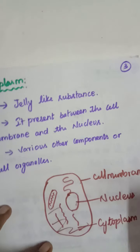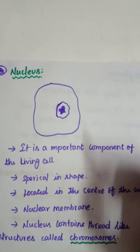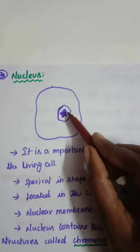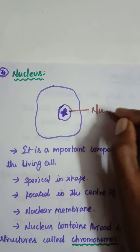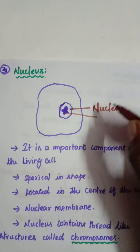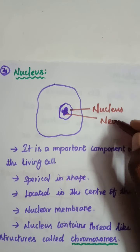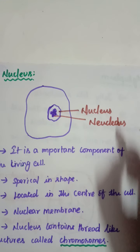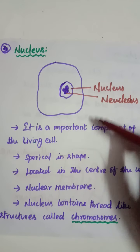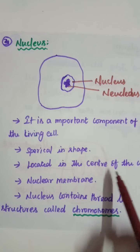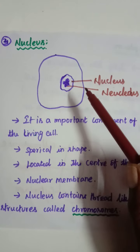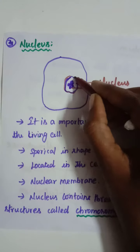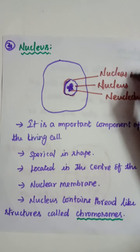Endoplasmic reticulum — are you understood, students? The nucleus is the main part of the cell. It is located in the center of the cell. The nucleus contains the nucleolus. The nucleolus is an important component of a living cell. The nucleus is spherical in shape and located in the center of the cell. The nucleus has a nuclear membrane, just as the cell has a plasma membrane.